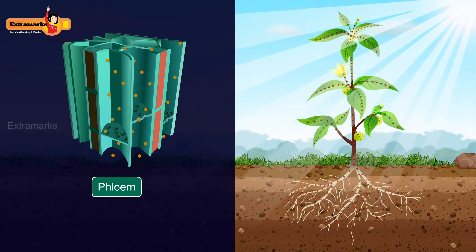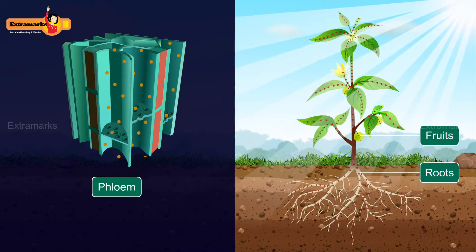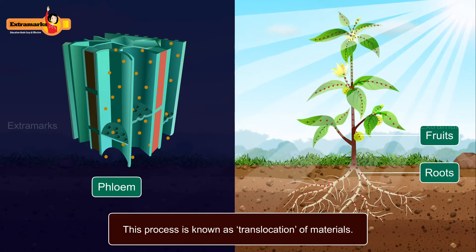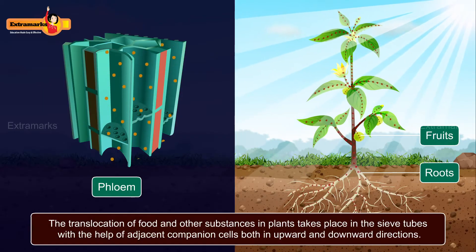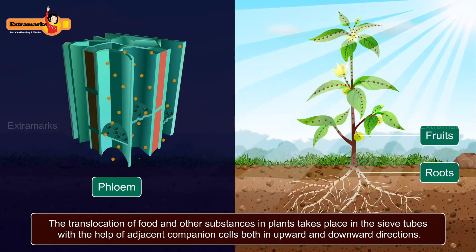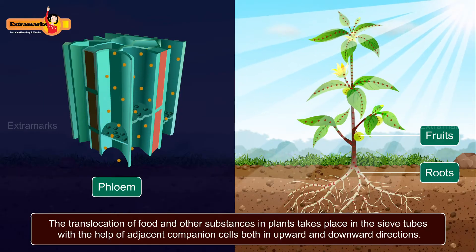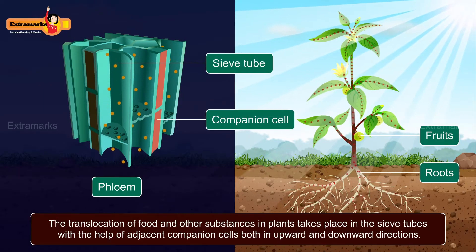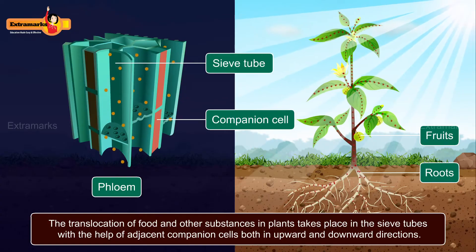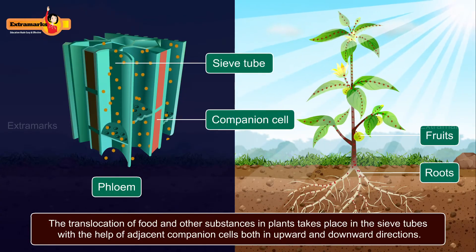Besides the products of photosynthesis, amino acids and other substances are also transported by phloem to the growing organs and to the storage organs of seeds, fruits, and roots. This process is known as translocation of materials. Translocation takes place in the sieve tubes with the help of adjacent companion cells, both in upward and downward directions.